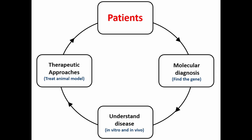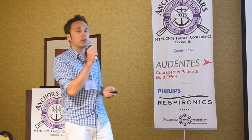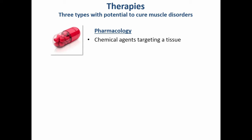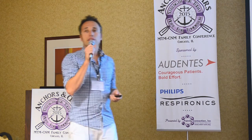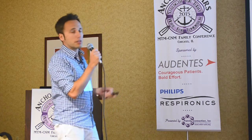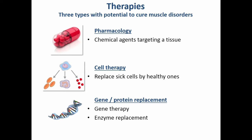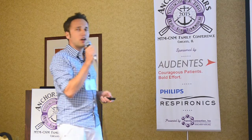In this talk I'll present the therapy we have developed in the lab. There are three different types of therapies. First, pharmacological therapy — chemical compounds that you take in targeting an organ or tissue. Second, cell therapy — the idea that sick muscle cells can be replaced by healthy cells. Third, gene or protein replacement, such as gene therapy done by Anna and others, or enzyme replacement therapy proposed by Valerian.